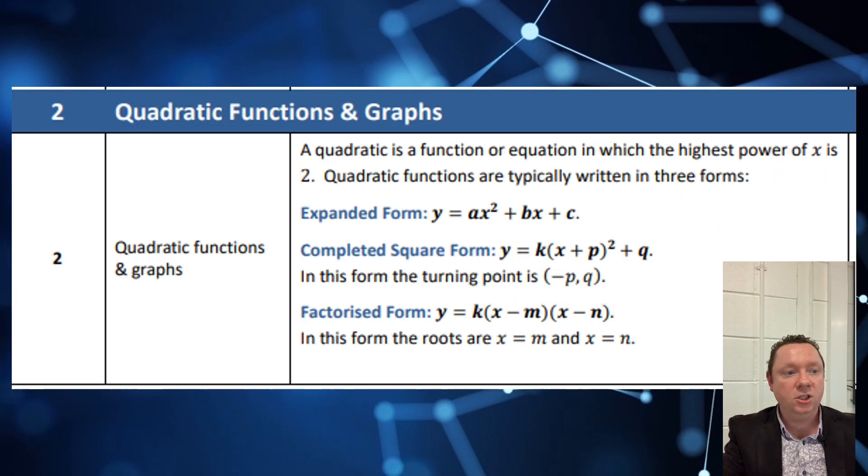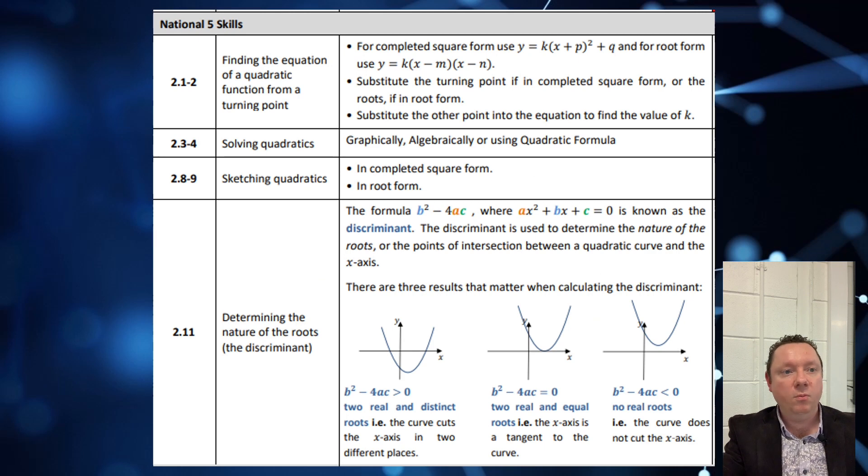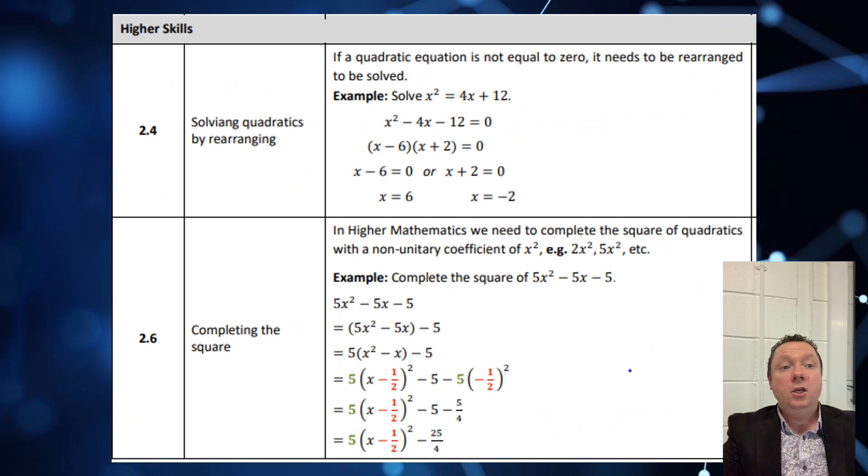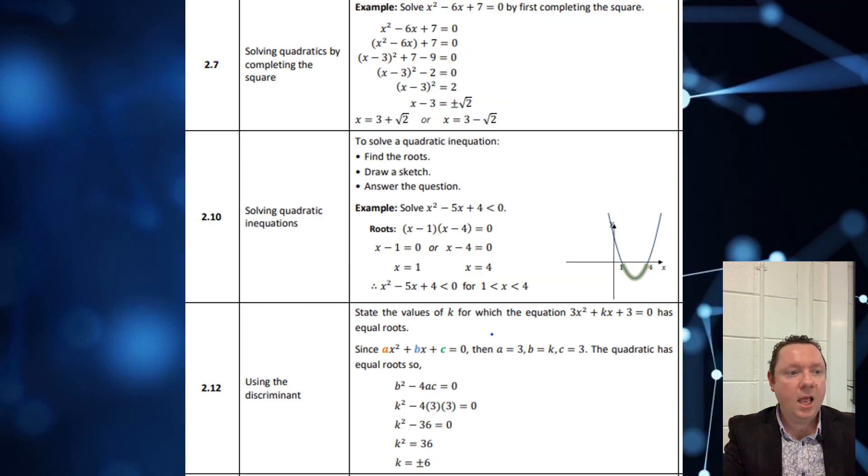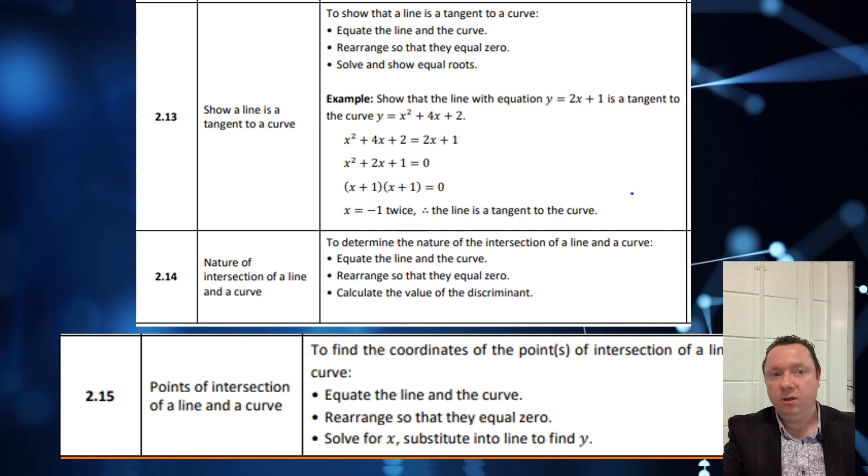Let's move on to quadratic functions. Stuff from National 5 is there. You should know completed square form, factorised form, expanded form. You should be able to form completed square form or root form. Find the turning point, substitute the other point to find the value of K. You should be able to solve quadratics in any which way you can. You should be able to sketch quadratics from completed square or root form. You should be able to determine the nature of the roots and use that information to state what the nature of the roots are. You should be able to solve quadratics by rearranging and by completing the square. You should be able to complete the square when there's a non-unitary x squared. So 2x squared, 3x squared, 5x squared. Solve quadratic inequalities and you should be able to use the discriminant. You should also be able to show that a line is a tangent to a curve.